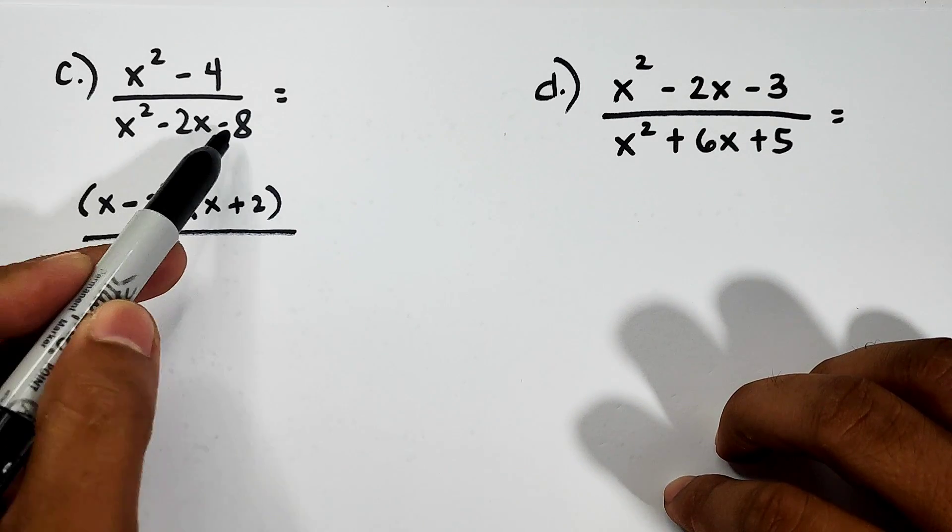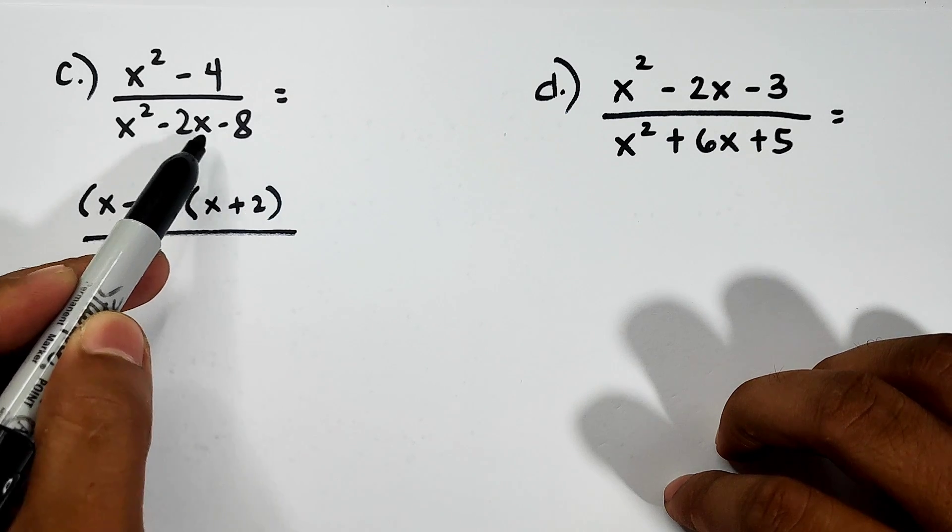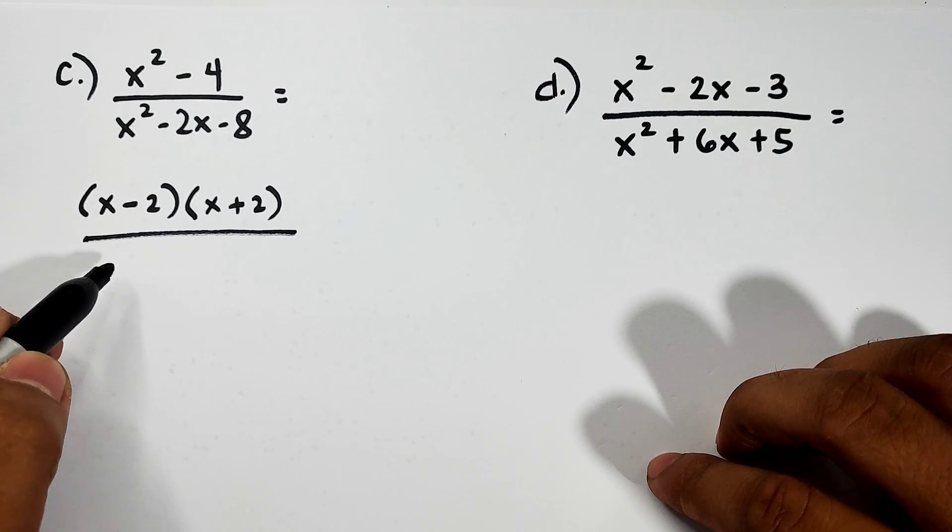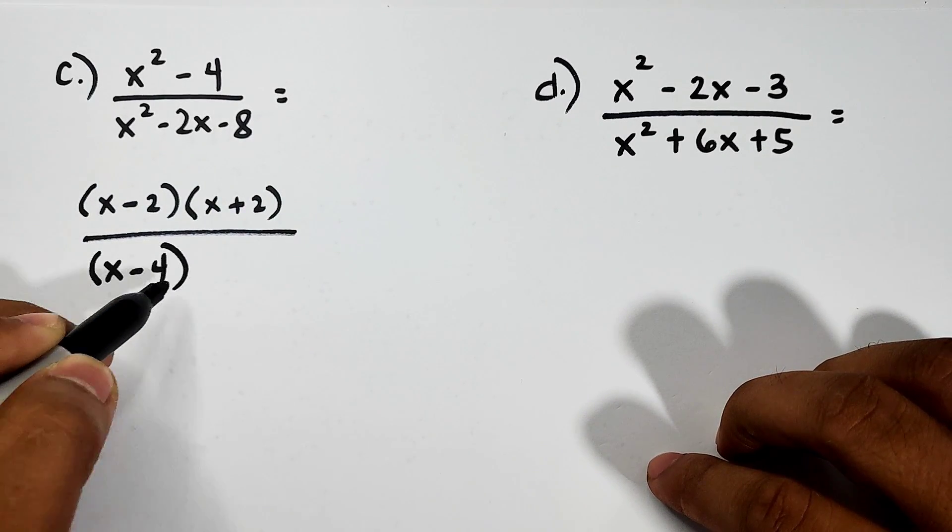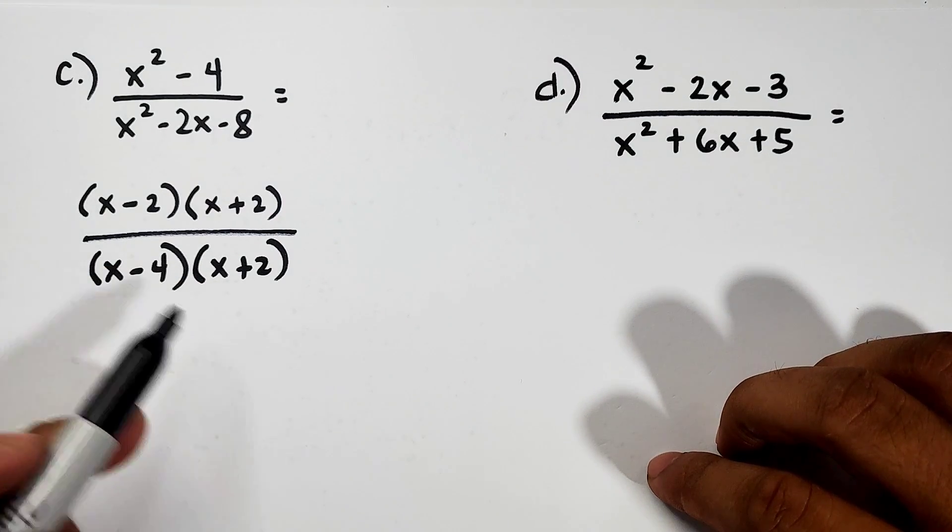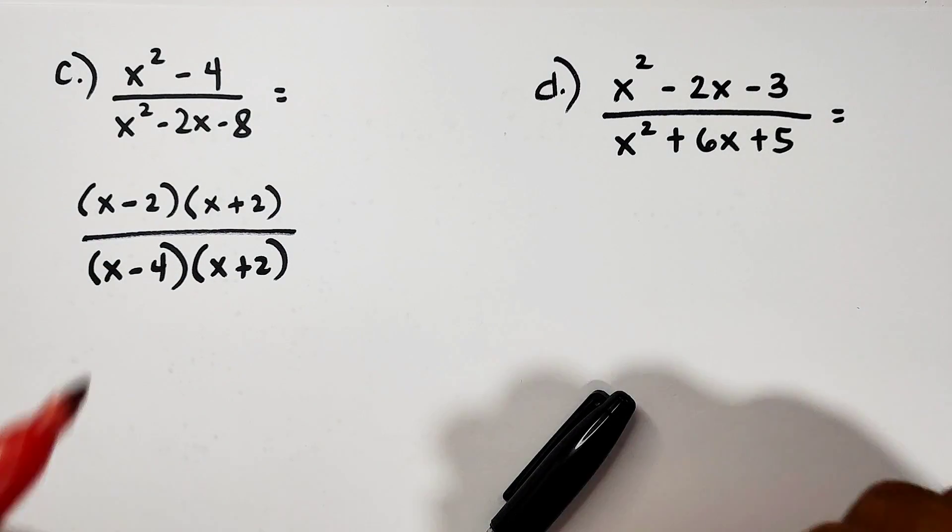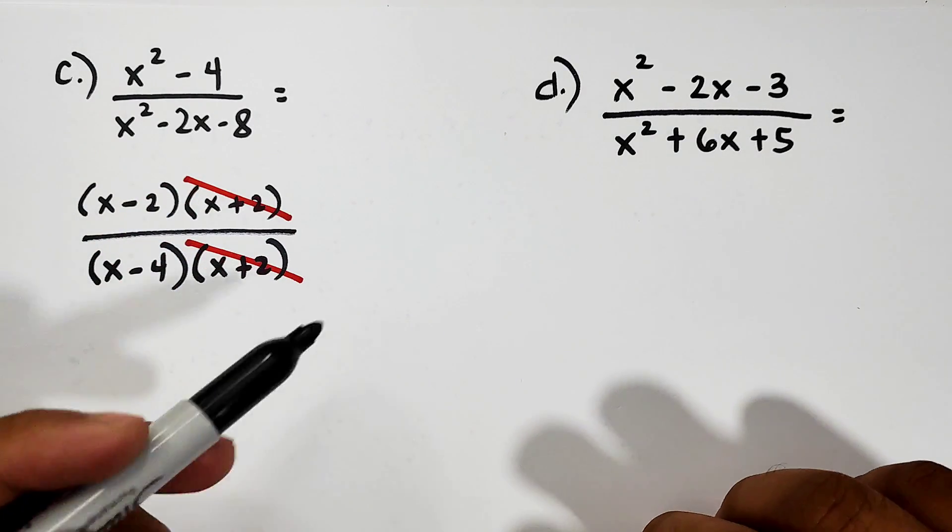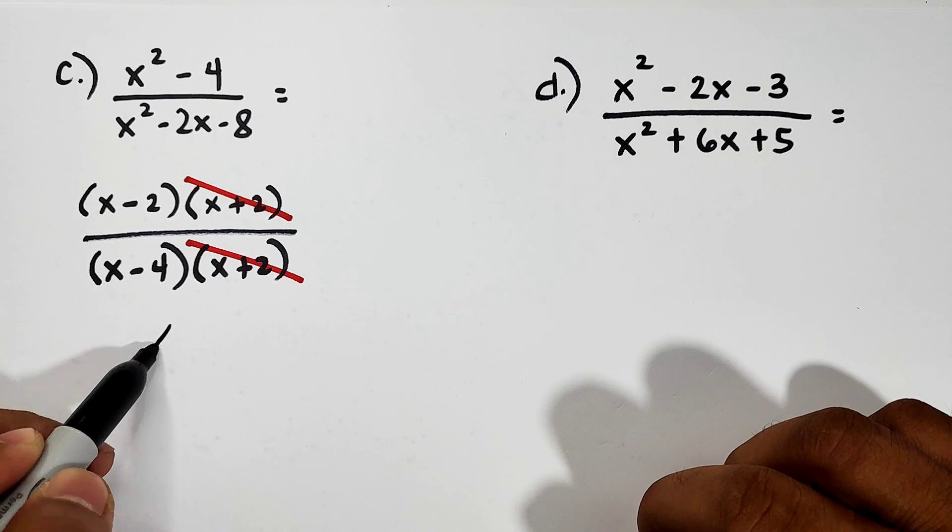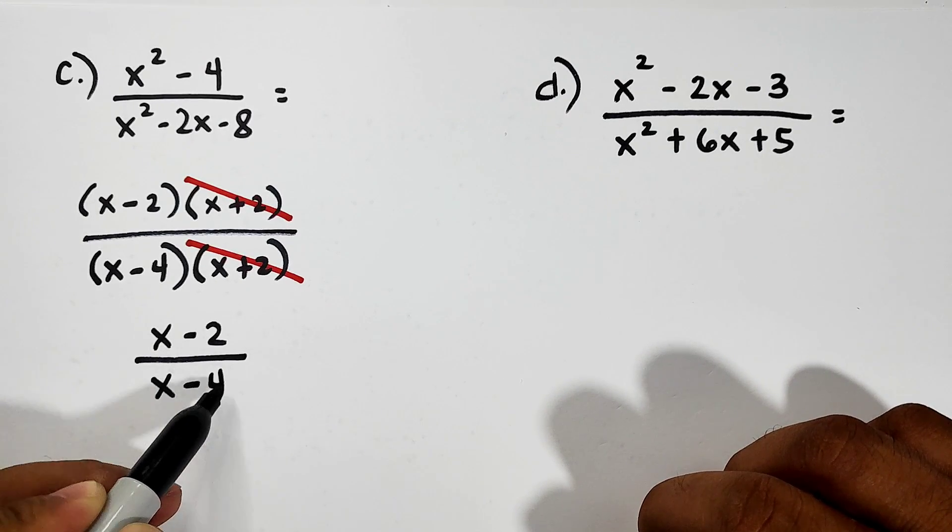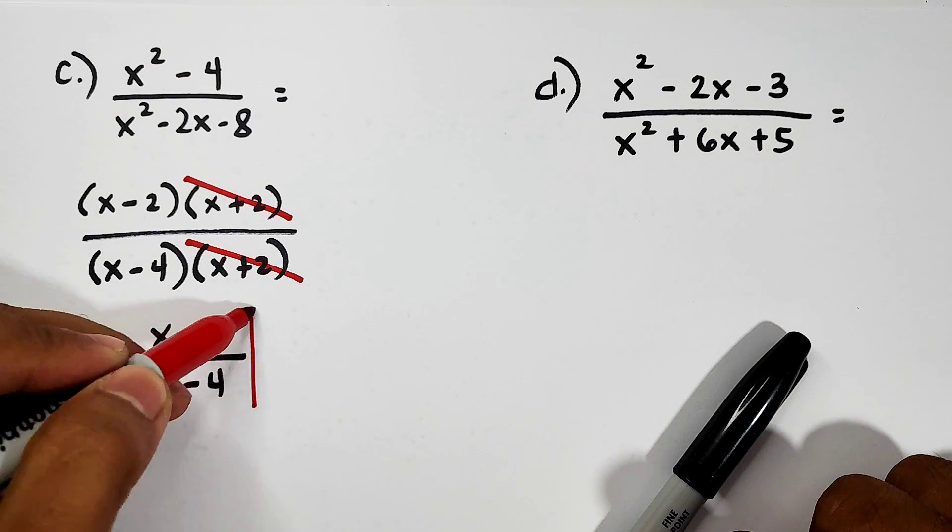Factors of this, what factors of negative 8 will give you negative 2? The factors are negative 4 and positive 2. So the factors of this expression is (x - 4)(x + 2). As you can see, we have a common factor. We can eliminate x + 2. And it will simply give us (x - 2) over (x - 4). And this is the answer for letter C.